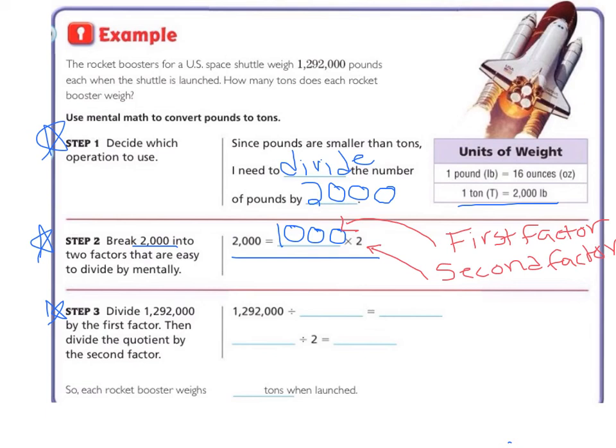So when we fill these in, we have 1,292,000 divided by the first factor, which is 1,000. And we get 1,292. And then we move down, and we take the quotient, which is the answer to our division problem, which was 1,292. And we divide that by the second factor, which is 2.